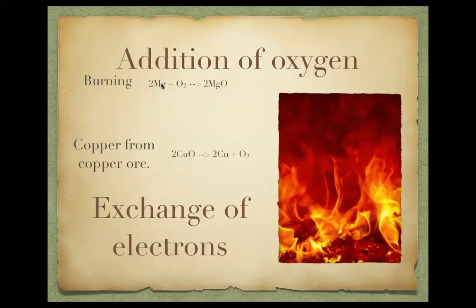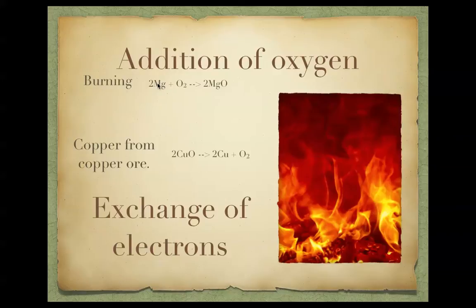Burning Magnesium involves the addition of Oxygen to make an ionic compound called Magnesium Oxide. We now know this formation actually involves the exchange of electrons. As seen in electron transfer diagrams, Magnesium loses two electrons and gives them to Oxygen, forming the ionic compound with a Magnesium 2+ ion and an Oxygen 2- ion bound together by electrostatic forces.